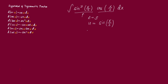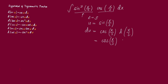Now to solve for du, we apply the differential of a trigonometric function as discussed in the previous video. The differential of sine gives us cosine of x/2, times the derivative of x/2. Simplifying, this is cosine of x/2 times one-half dx. So this is your value for du.